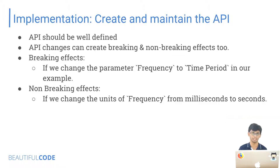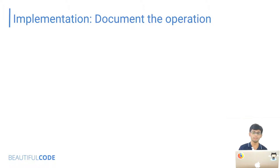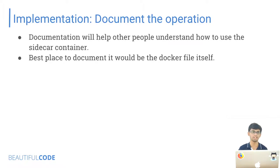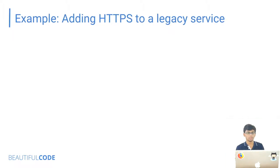Document the operations: to make it easier for others to understand what your sidecar container does and how to use it, document what parameters to pass and the units in which to pass them. The best place to do this is in the Dockerfile itself.